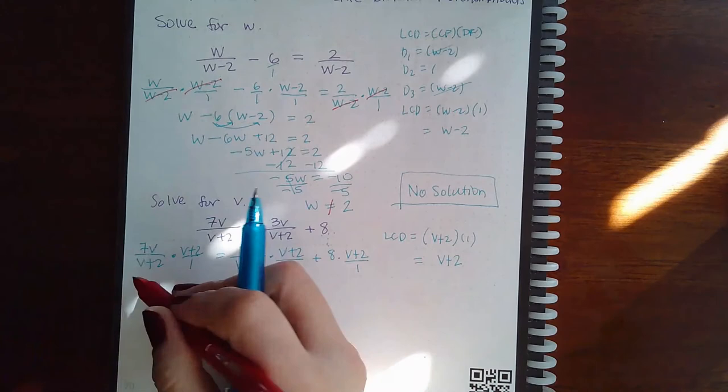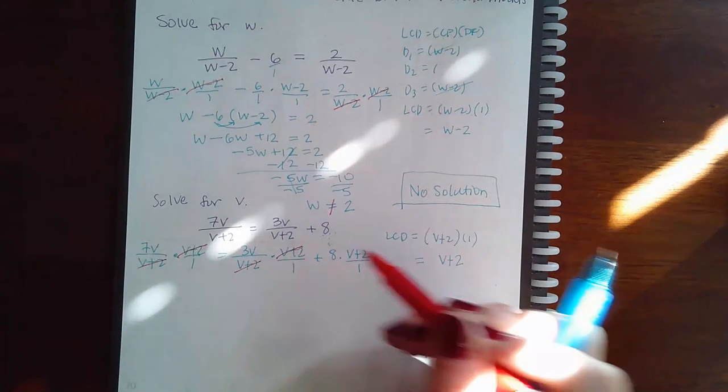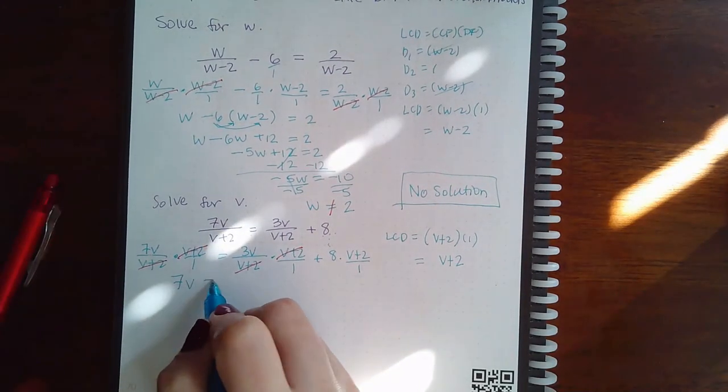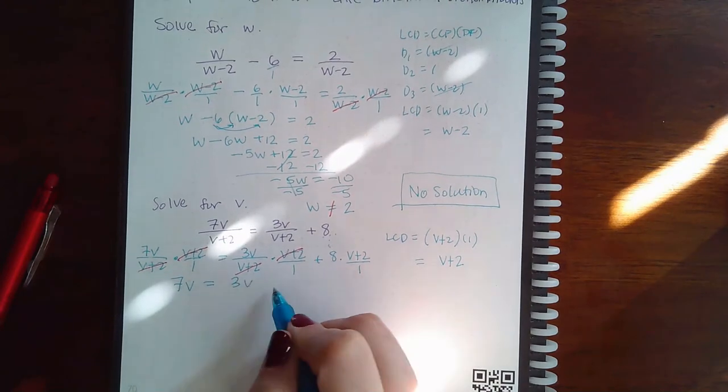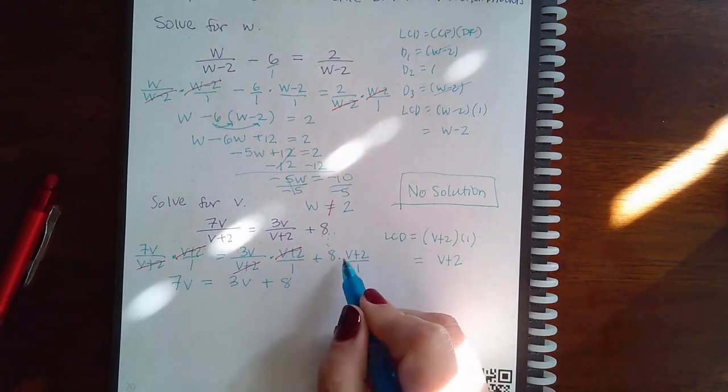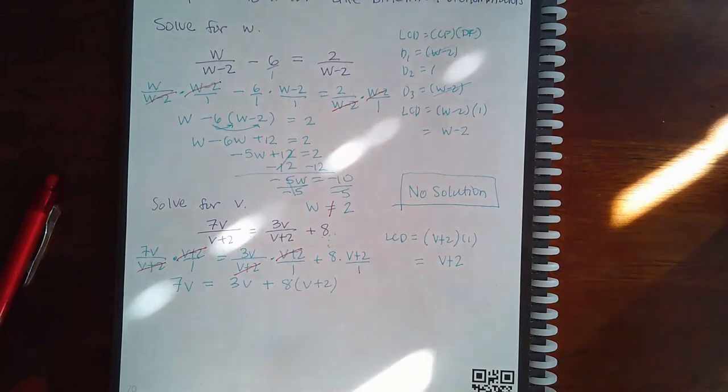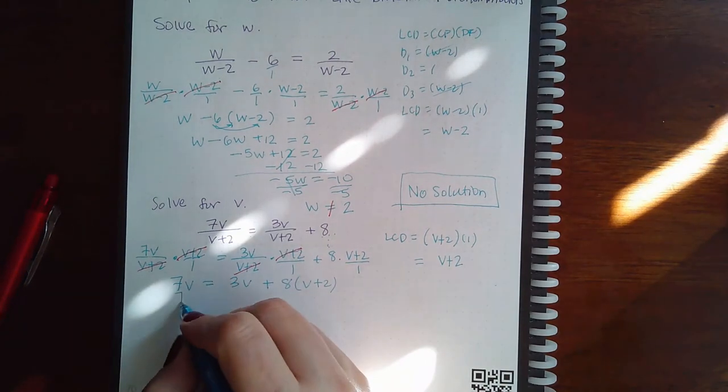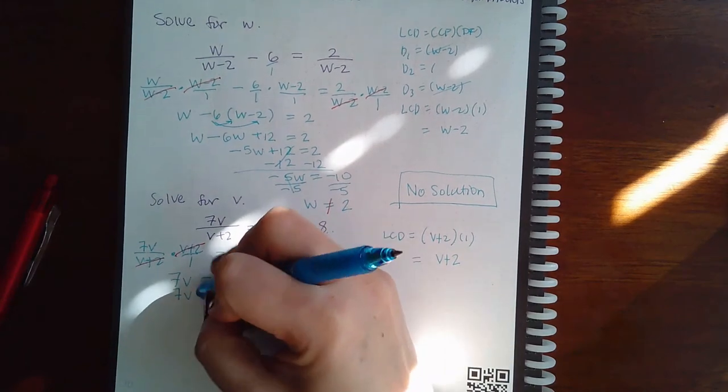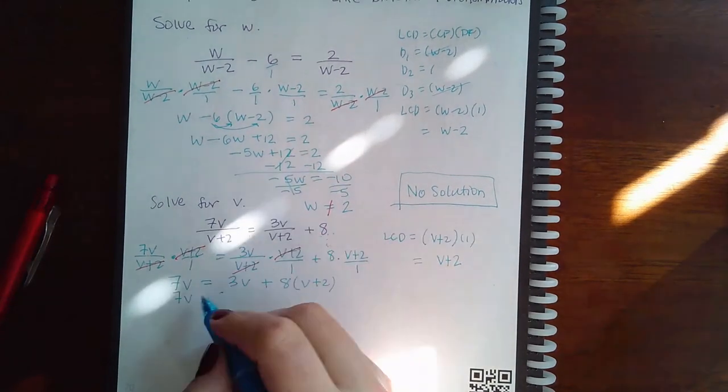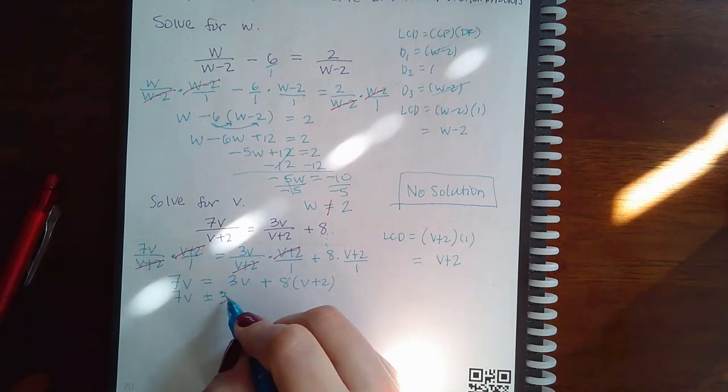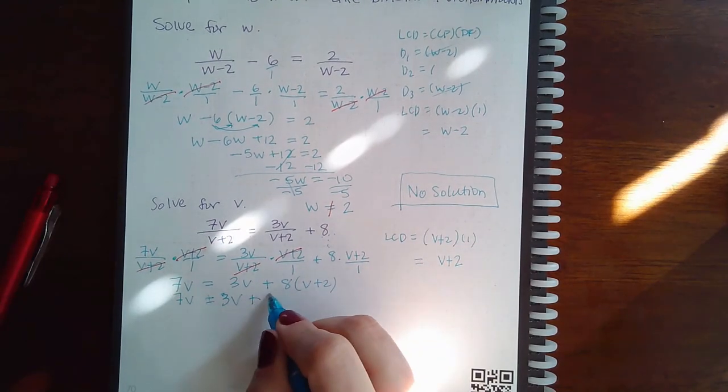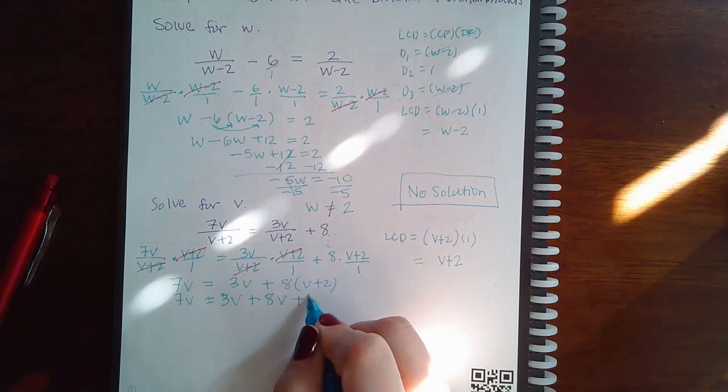So then here the v plus 2's cancel. Here the v plus 2's cancel. So I'm left with 7v times 3v plus 8 times this entire numerator, v plus 2. Since all that's left in the denominators are 1's, we don't need to write this as a fraction. So we end up with 7v equal to positive 3v. And then I'm going to distribute this positive 8. So it becomes positive v and positive 16.